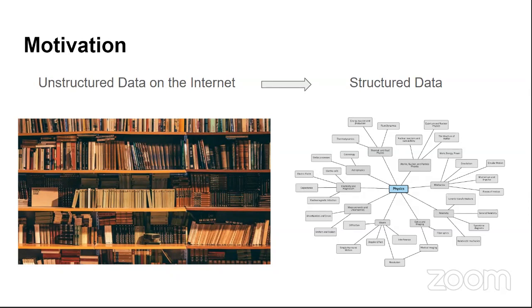The motivation for relationship extraction is simple: you have a lot of unstructured data on the internet — web pages, Wikipedia, tweets — and you want to make sense of that data. For example, from Wikipedia you can extract information about a particular person or entity. Also, if many people are tweeting about health problems, you can probably infer there is a disease outbreak.